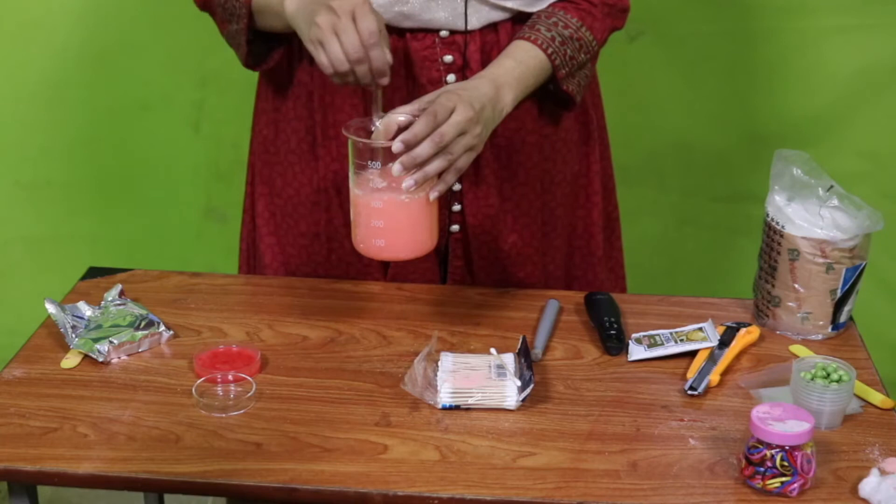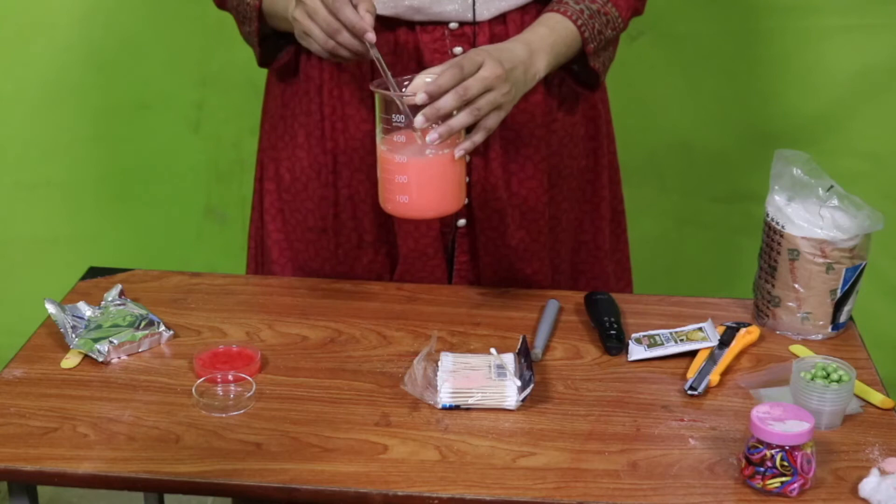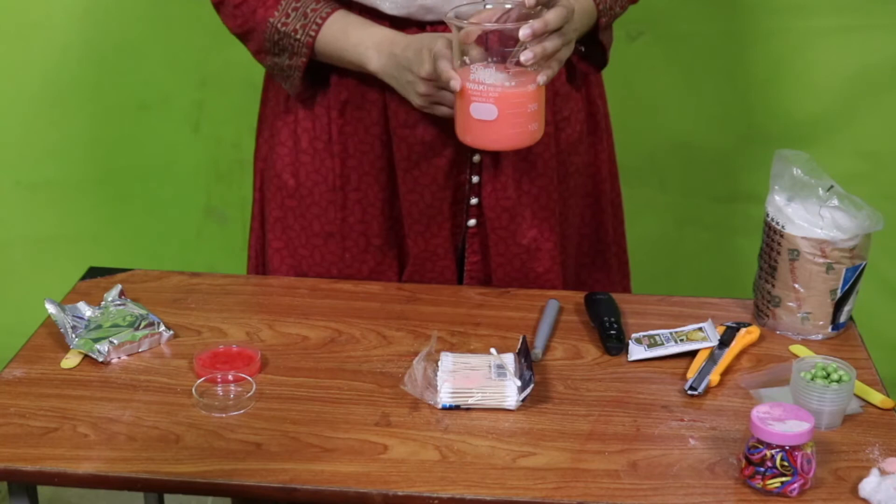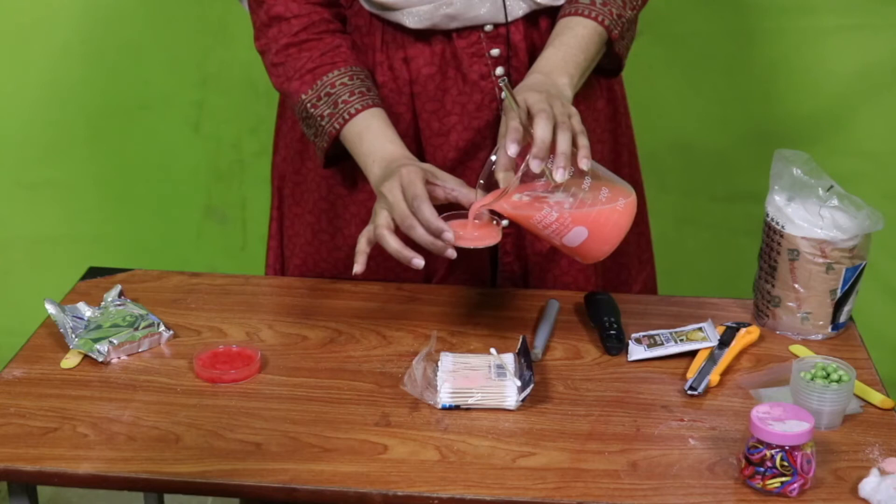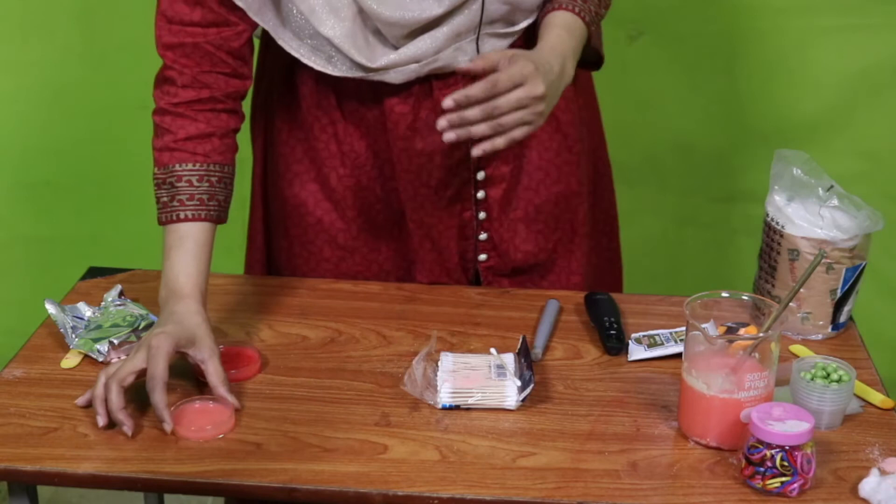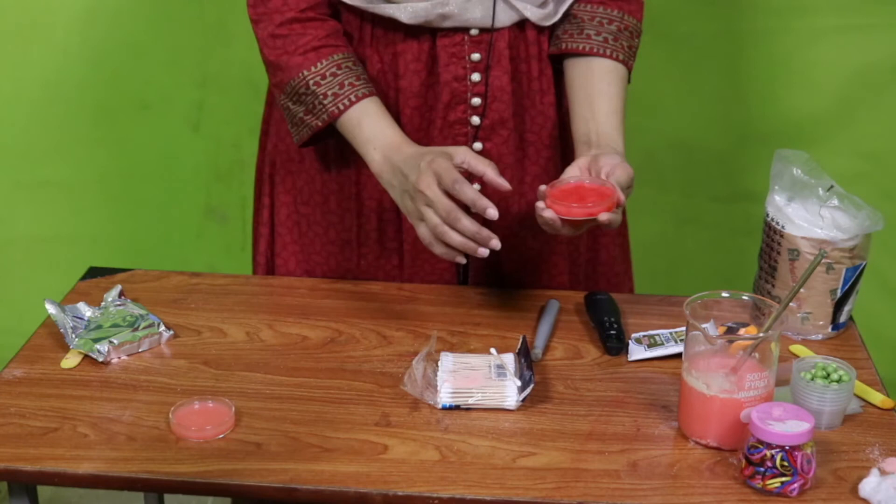Water must be warm so that everything will mix in well. Now again mix it well. Once it's mixed, then pour it in a petri dish. Before it becomes solid, you can see it's solid now. I have this petri dish - if you don't have this, you can use any smaller plate. I will pour it inside and I will allow it to cool and then it will turn into solid.